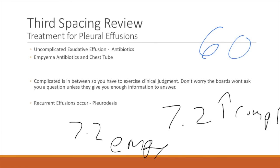So that's essentially what we're looking at. With uncomplicated effusions, you can use antibiotics. With empyema, you're going to use antibiotics and a chest tube. Keep in mind this is all a gradient, so if it's complicated, you need to use your clinical judgment. As far as step two tie-ins or possibly step three, if you do have recurrent effusions, you might want to move forward to a pleurodesis, where you essentially attach the parietal pleura and the visceral pleura, ending up without that pleural space.